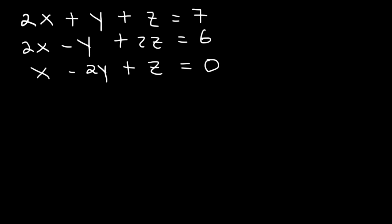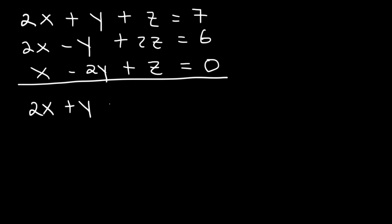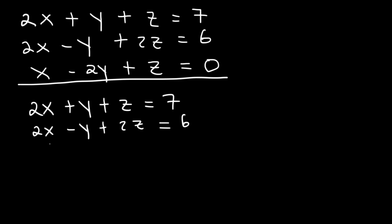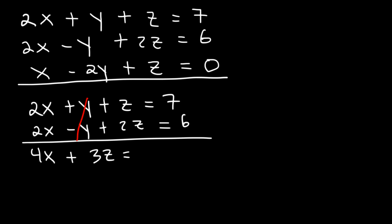What we need to do is choose two out of the three equations. Let's choose the first two equations because if we add them, notice that we can cancel y. So once we add them, 2x plus 2x is 4x, z plus 2z is 3z, and 7 plus 6 is 13. I'm going to save this equation.